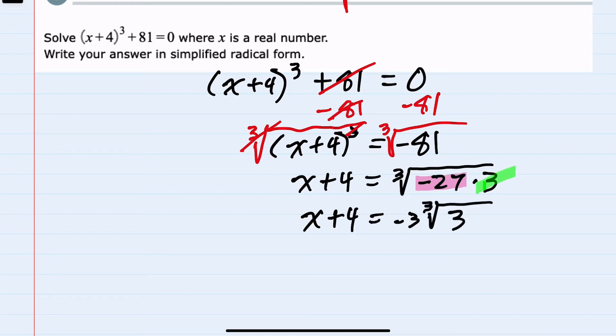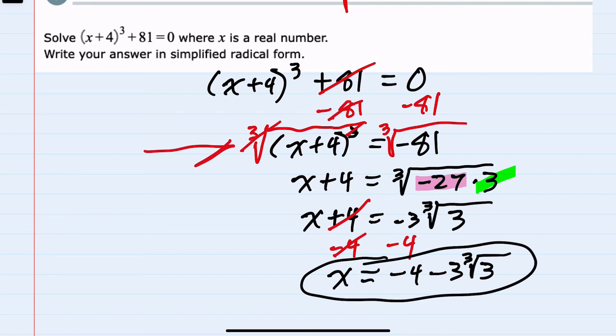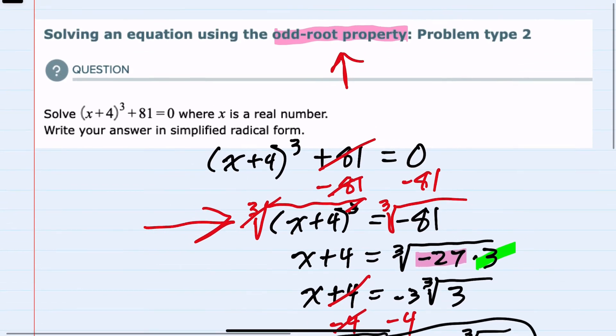Lastly, to solve for x I would subtract 4 from both sides. Canceling on the left, I now have x isolated. On the right side, these are not like terms, but I can write that as -4 minus 3 times the cubed root of 3. We have solved for x using the odd-root property.